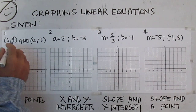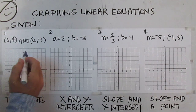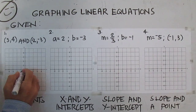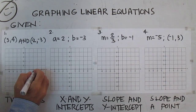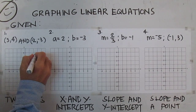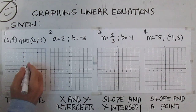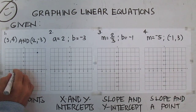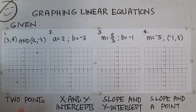For number one, you are given points (3, 4) and (-2, -3). Just plot the points. For (3, 4), start from the origin, move three units to the right then four units up, and draw a dot. For (-2, -3), from the origin move two units to the left and three units down, draw a dot, then connect.